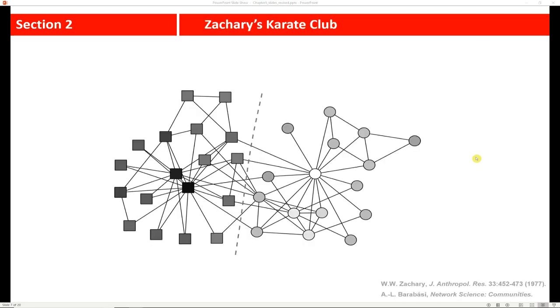One very famous example of a community that was studied is what's called Zachary's Karate Club. So back in the 70s, there was this karate club that was studied by a guy named Wayne Zachary. He spent a long time as an anthropologist studying the members of this group. And you'll read more about it in the paper that I've given you for your assignment.